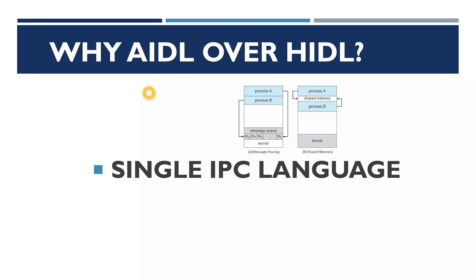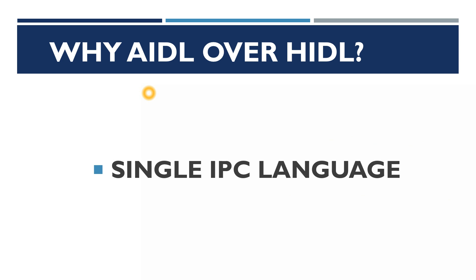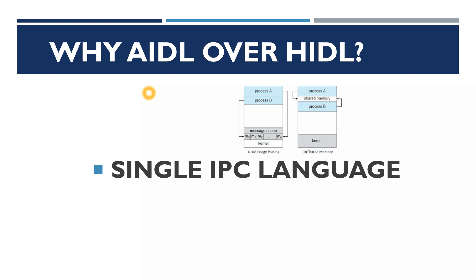The third reason is that AIDL is a single IPC language. If you are familiar with AIDL for writing code in the framework or application layer but want to write code for lower hardware layers, you previously had to learn HIDL as an extra overhead. With AIDL being a single language, once you learn it properly, you can code the entire Android architecture — including the lower hardware layers. It's easy to learn, easy to debug, and easy to customize.